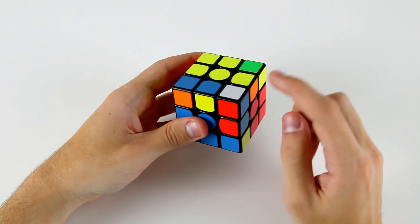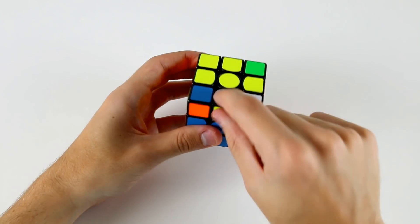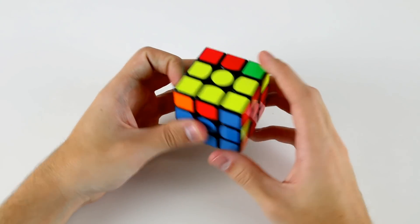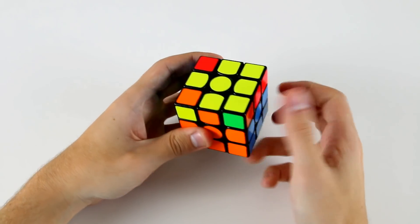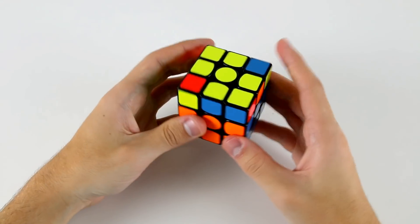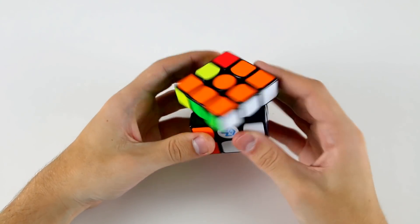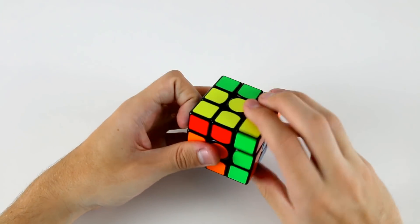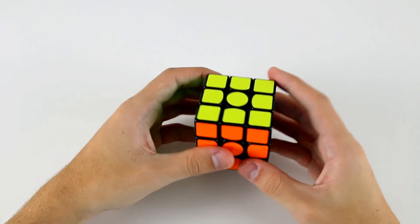Then we have this F2L case. This is a little bit more advanced, but what I can do here is actually solve this and orient this last layer edge. I can take it out like that and then either do r' u2r or u r' u r like that to solve my last F2L pair. Then I've got OLL and PLL. That was a difficult cross, an easy F2L and a decent last layer.